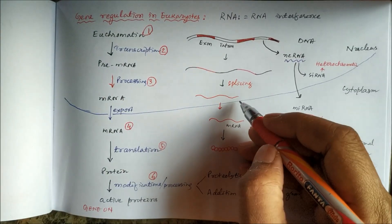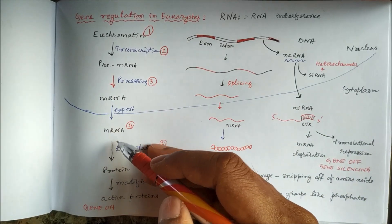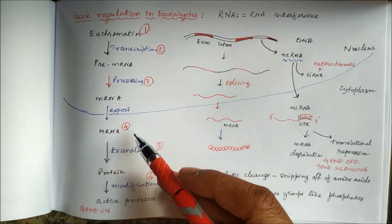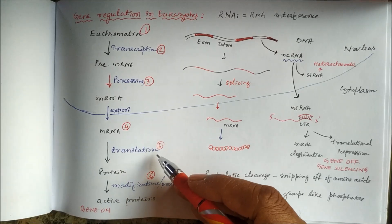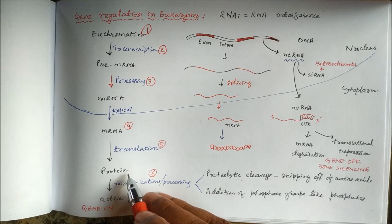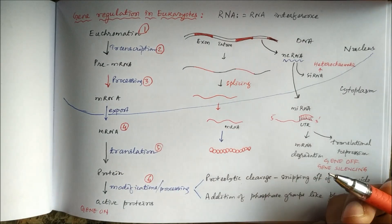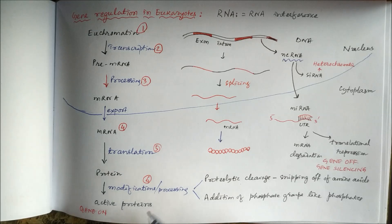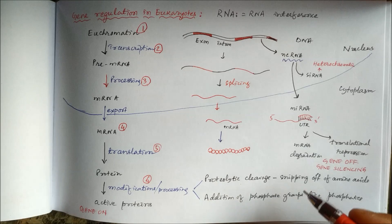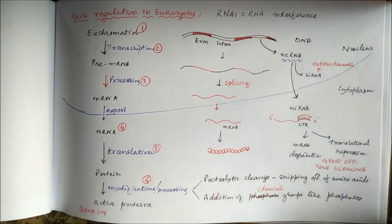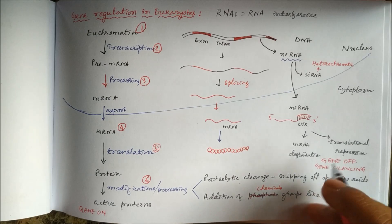The mature messenger RNA is exported to the cytoplasm from the nucleus. Based on the codons in the mRNA, transfer RNA supplies the required amino acids which combine to form a protein — that process is translation. The protein then undergoes modifications such as proteolytic cleavage, addition of phosphate groups, and addition of other chemical groups to produce structurally and functionally active proteins.